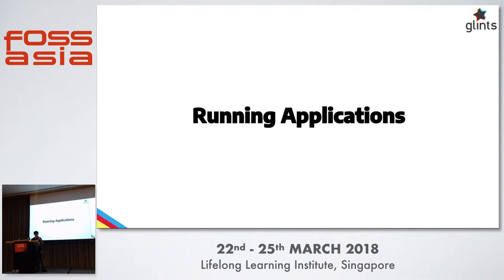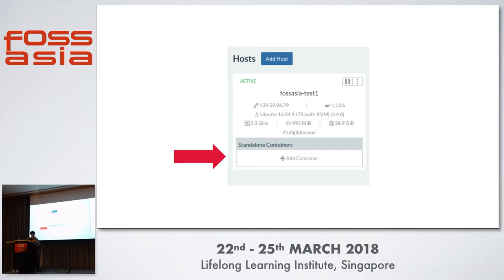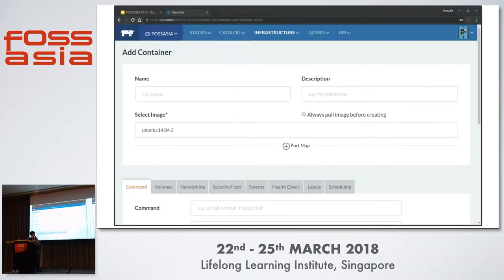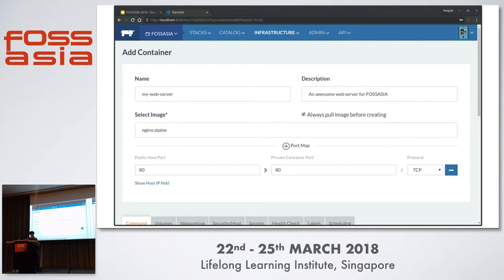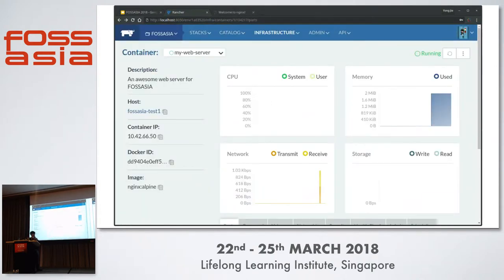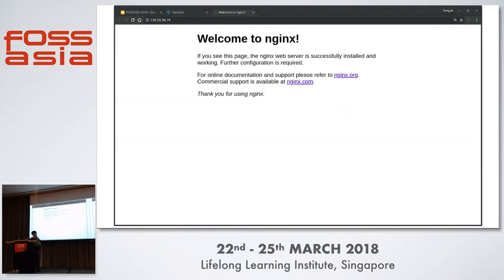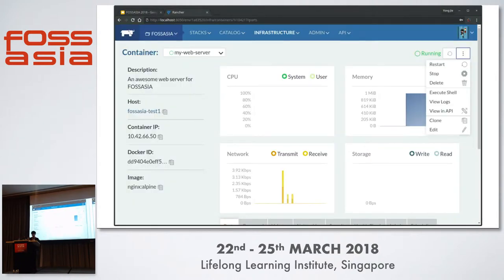So how about running applications? Having hosts that don't run any services is kind of useless. There are two main ways. The first is you can run standalone containers just like you would normally. You just need to specify the image you want to use — in this case I specified Nginx and mapped port 80. You create it, the container gets created, and you can access it directly through the node's IP address on DigitalOcean. You can also see metrics like CPU usage, memory usage, storage, and network.